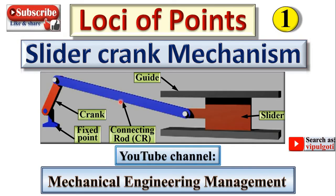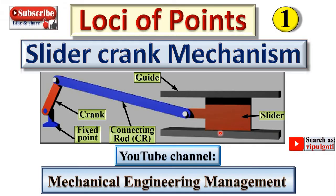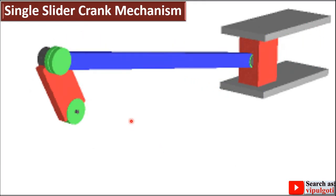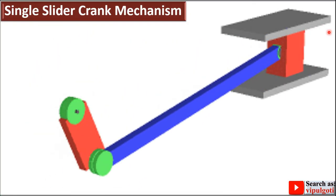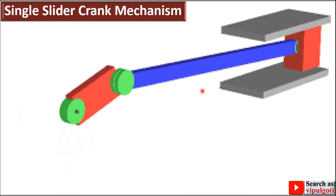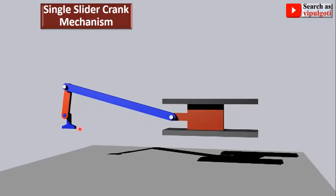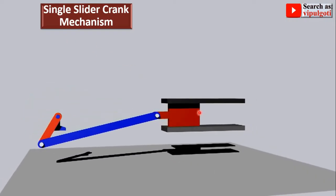There are four main components: the crank, the connecting rod (short form CR), the slider, and the fixed point — which you can call the frame. Look at this figure carefully — the animation of the single slider crank chain mechanism. Here you can see the crank rotates, the slider slides, and this one is the connecting rod.